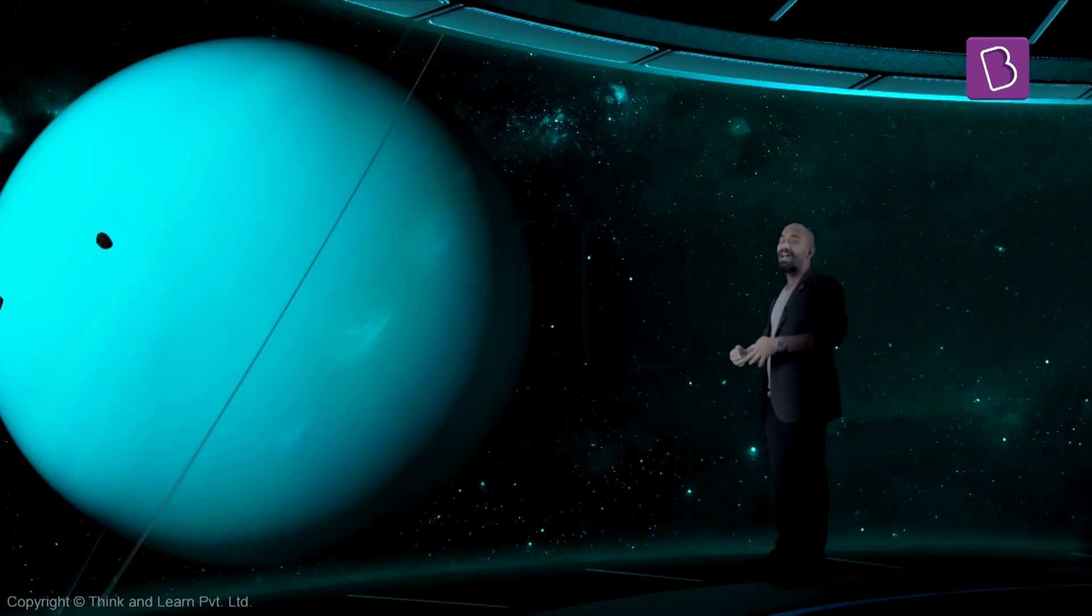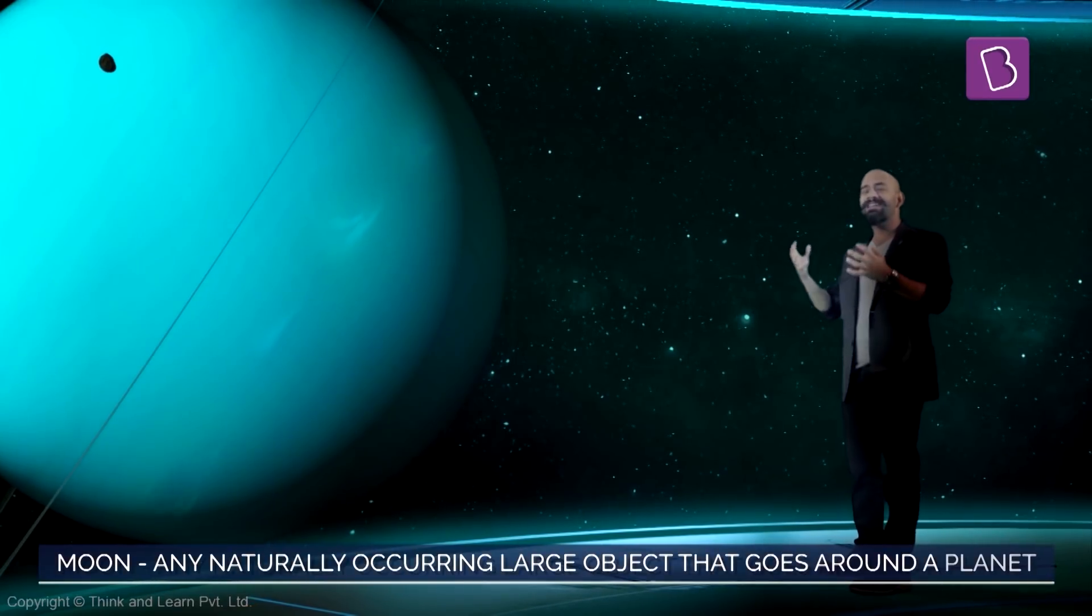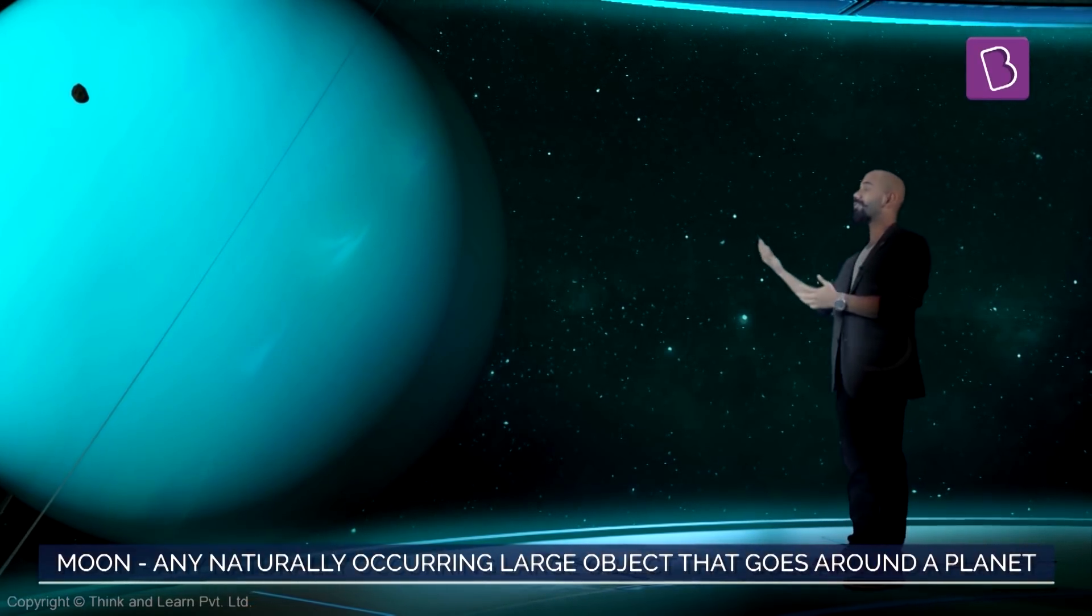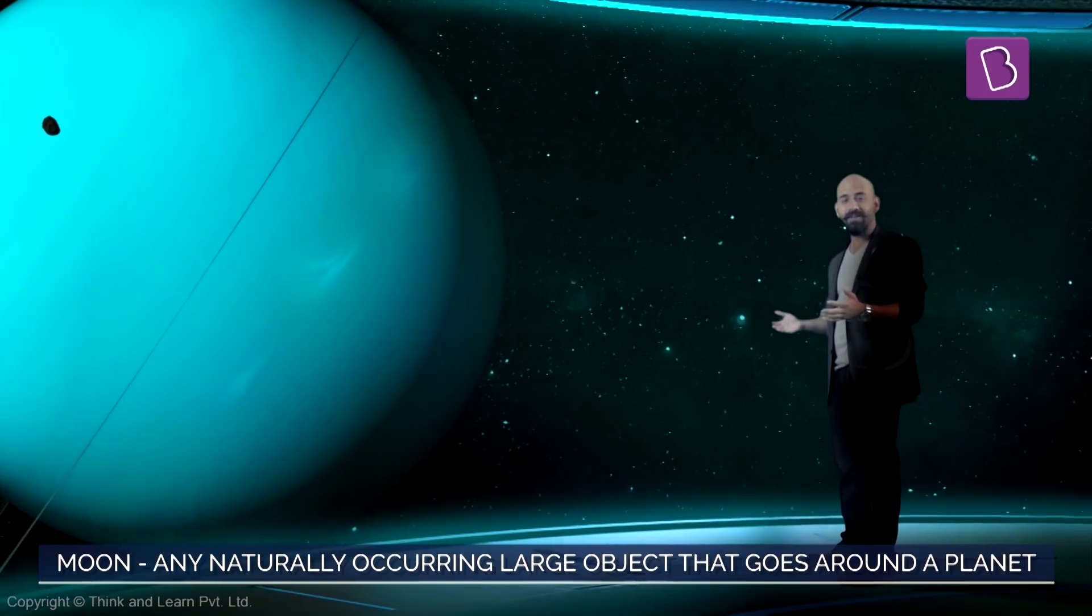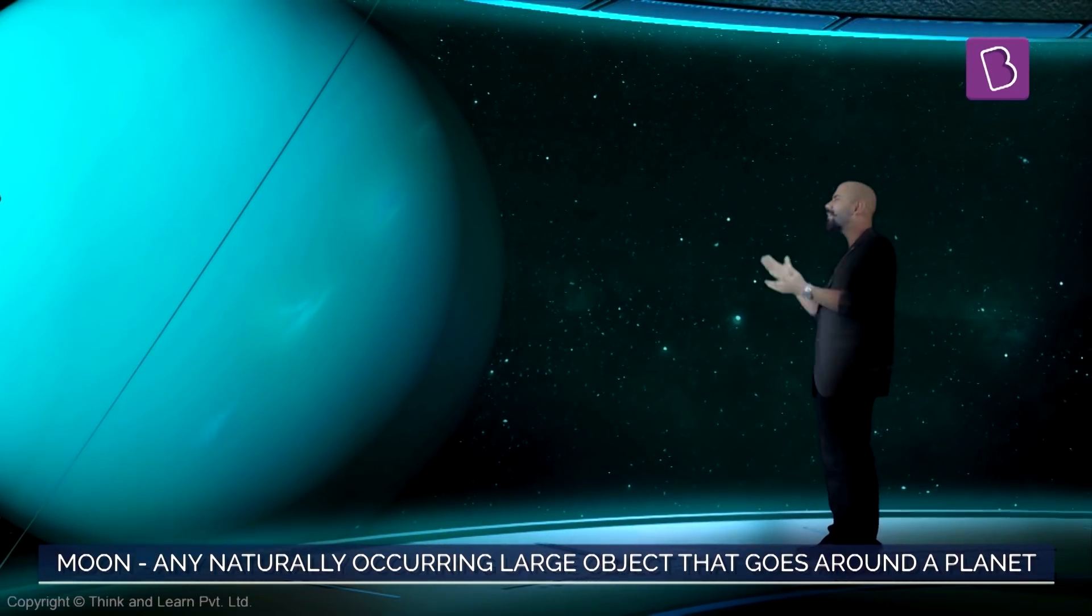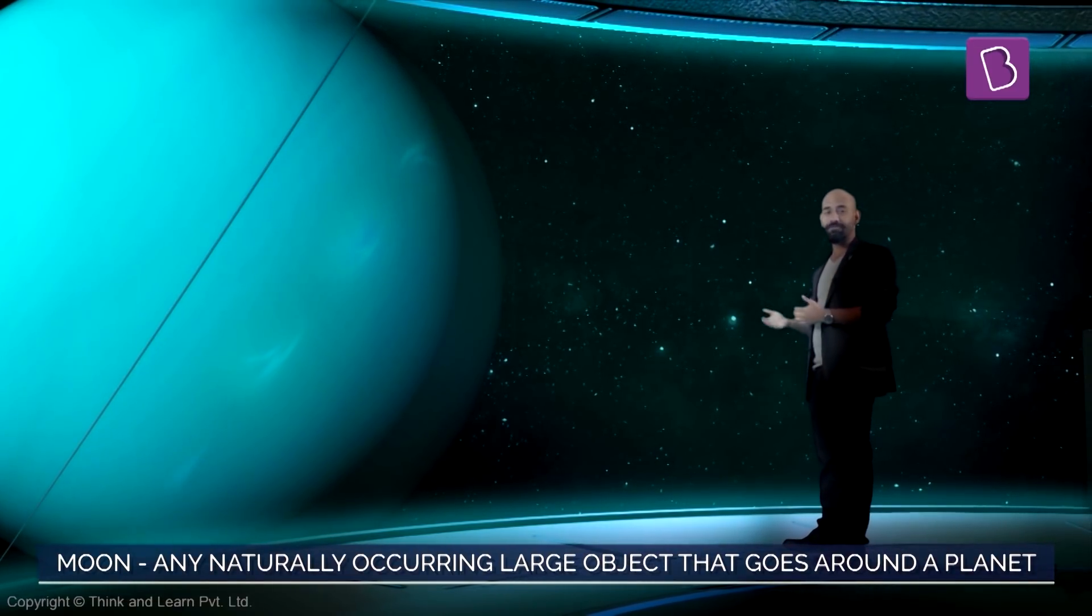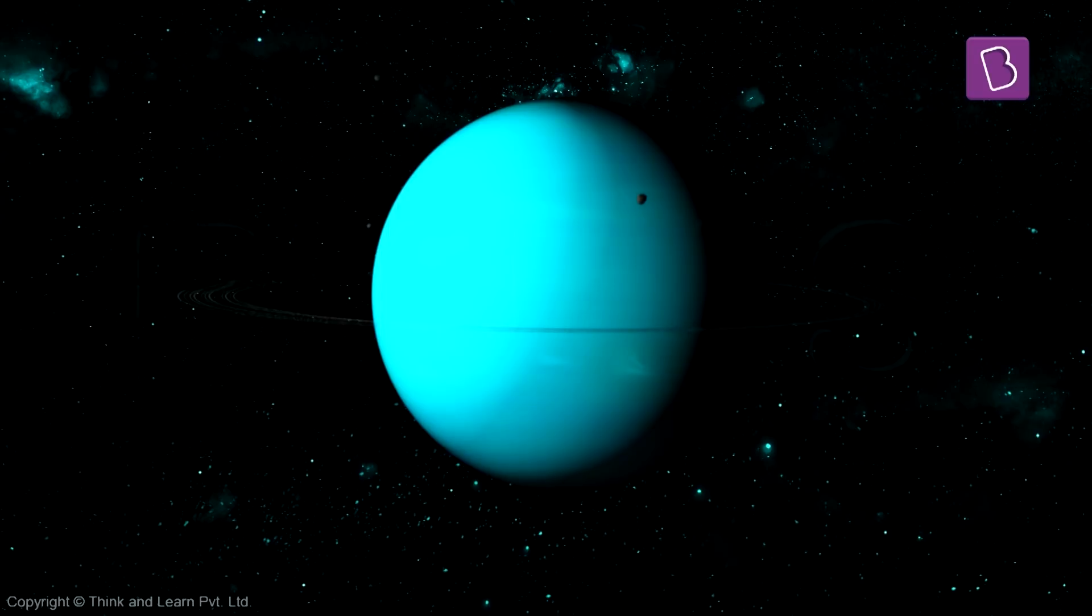Uranus has 27 moons. But I thought there is only one moon, our moon? Well, any naturally occurring object that goes around a planet is called a moon. Earth has one such object which we call the moon, and similarly, Uranus has 27 such objects, therefore it has 27 moons.